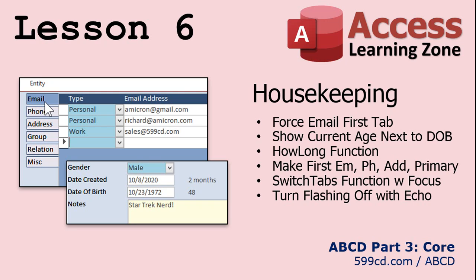Right now you've got to click it manually. We'll do it so if you enter one and there isn't a primary, it makes the first one primary. Then we'll make a switch-tabs function because there's a lot going on when we switch from tab to tab — we're changing colors, we're changing what forms are underneath. I'm going to do some stuff with the focus to jump to a new record on the bottom so you can just click on the email tab and then start typing. Then we'll turn the flash off with focus, because as things are redrawing on the screen you'll notice a little bit of flashing, so we'll turn that off with the echo command. Lots to do in lesson six — it's a long lesson.